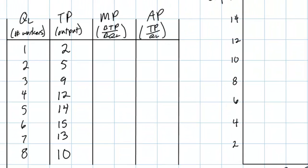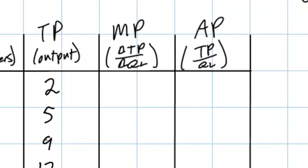In the case of my class, the total product — the length of the chain — got longer and longer until we hired our sixth worker. Beyond the sixth worker, the total product actually began to decline, indicating that with eight workers in my factory the total output was actually less than when I had only five or six workers.